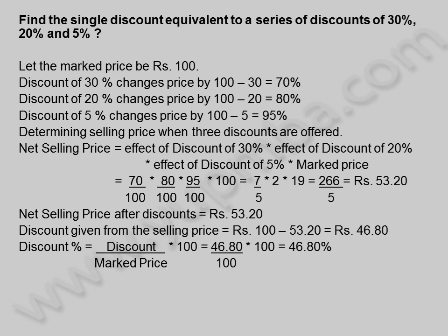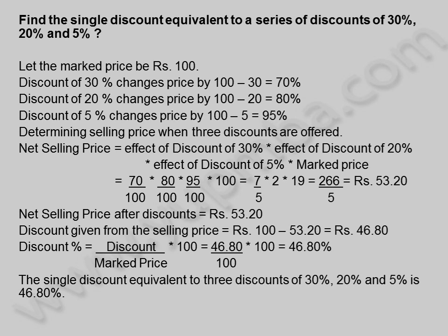Discount percentage is equal to discount by marked price into 100, is equal to 46.80 by 100 into 100, is equal to 46.80%. The single discount equivalent to 3 discounts of 30%, 20% and 5% is 46.80%.